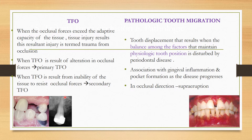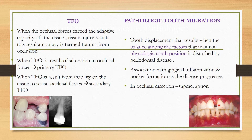When TFO results from the inability of the tissue to withstand or resist the occlusal forces, that is secondary TFO. You can see in this picture that the tooth is unable to withstand the occlusal forces, which leads to further bone loss. This is called secondary TFO, which can lead to pathological tooth migration — any tooth displacement that results when the balance among factors maintaining physiological tooth position is disturbed by periodontal disease. This is always associated with gingival inflammation and pocket formation as the disease progresses.